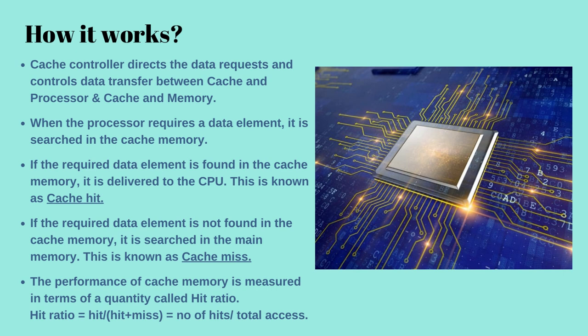As the data is not found in cache memory, it is accessed from the main memory and a copy of that data is also copied into the cache memory, so that the next time a data request for the same data comes in, it will be available in cache memory. The performance of cache memory is frequently measured in terms of a quantity called hit ratio, which is equal to the number of hits divided by the number of hits plus the number of misses, or the number of hits divided by total accesses.